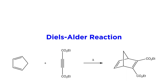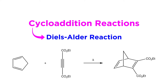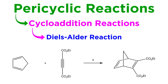Much earlier in this series we discussed the Diels-Alder reaction. This is an example of a cycloaddition reaction, which is one subclass of a broader class of reactions called pericyclic reactions. We will spend the next few tutorials going over all kinds of pericyclic reactions, so to start from a familiar place, let's revisit the Diels-Alder reaction and dig a little deeper.